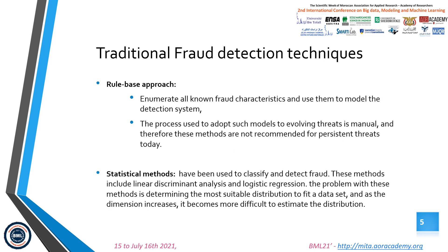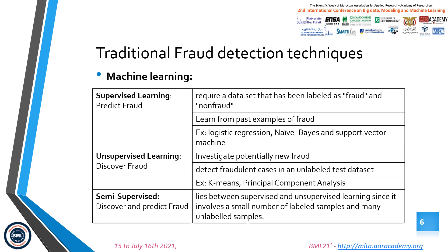Let's now look at the traditional fraud detection techniques. We have the rule-based techniques, statistical methods, and machine learning methods, which are categorized as supervised learning, unsupervised learning, and semi-supervised learning. Supervised learning learns from past examples of fraud using historical data — for example, logistic regression and support vector machine. Unsupervised learning detects fraudulent cases in unlabeled test data, with clustering as an example. Semi-supervised learning lies between supervised and unsupervised, involving a small number of labeled samples and many unlabeled samples.